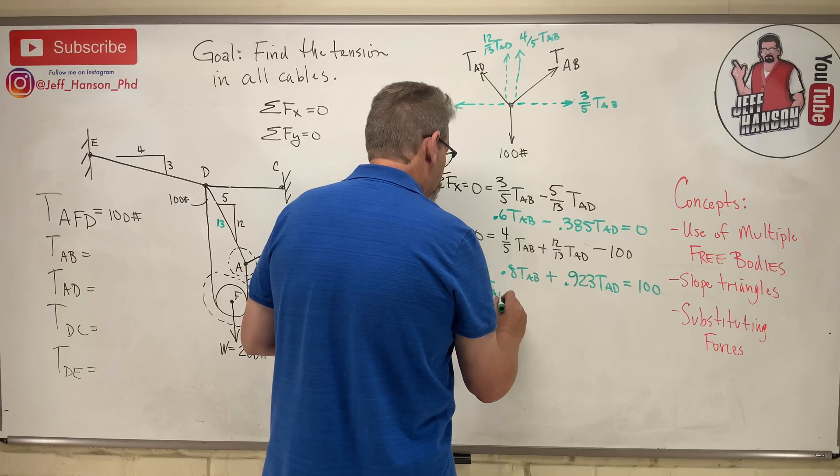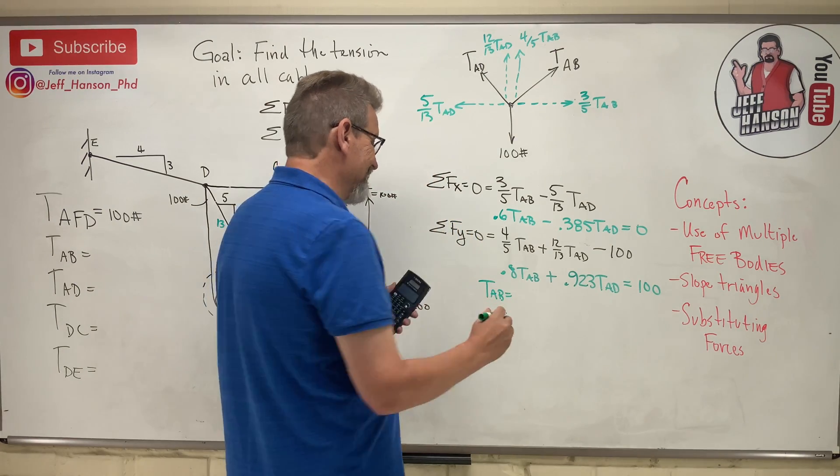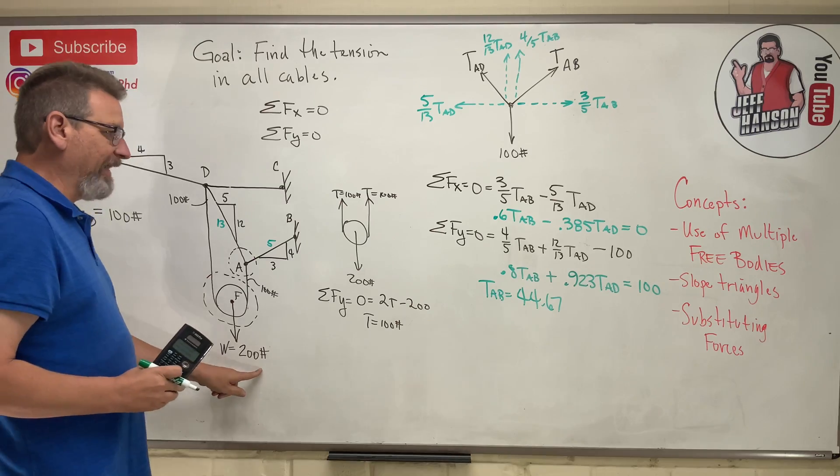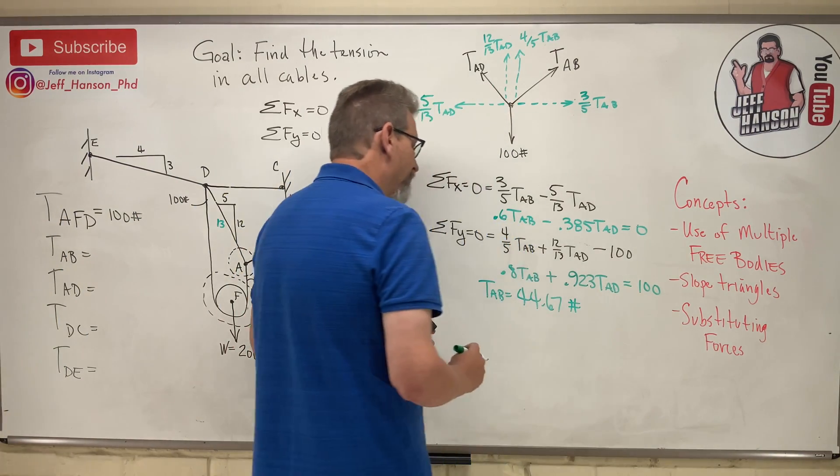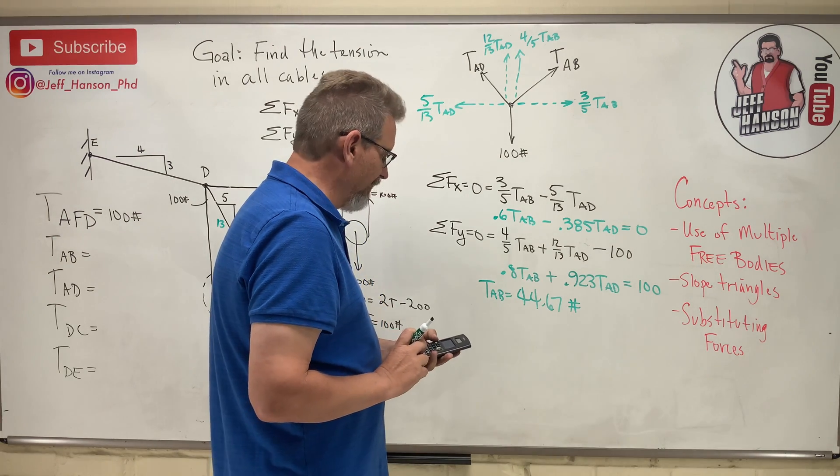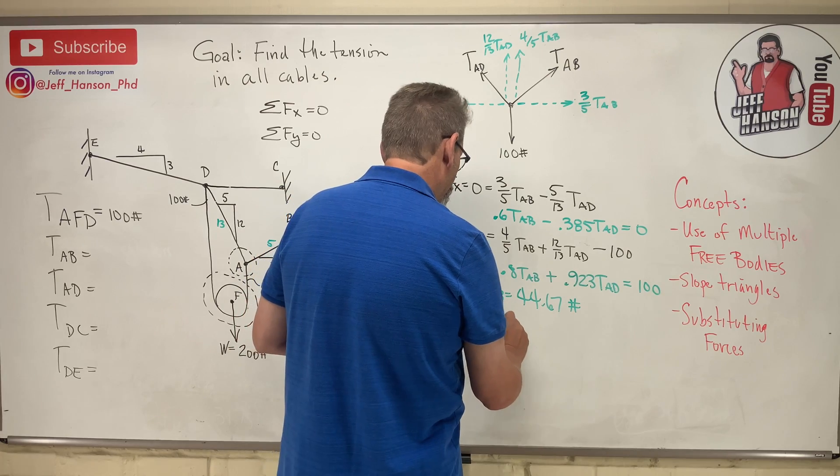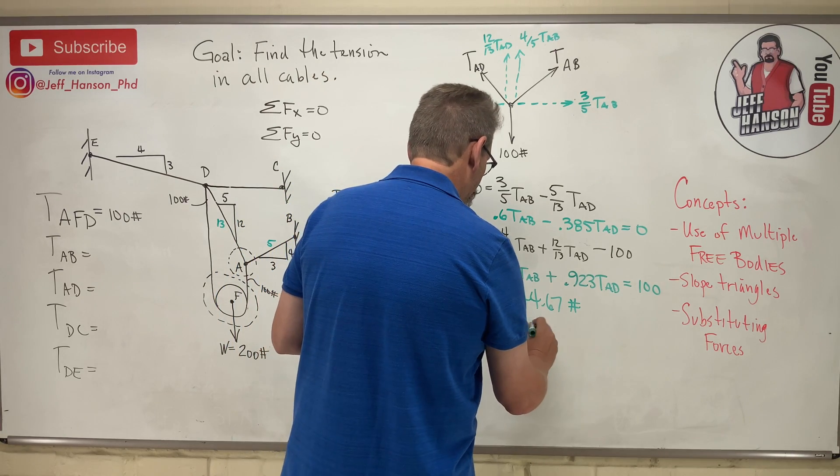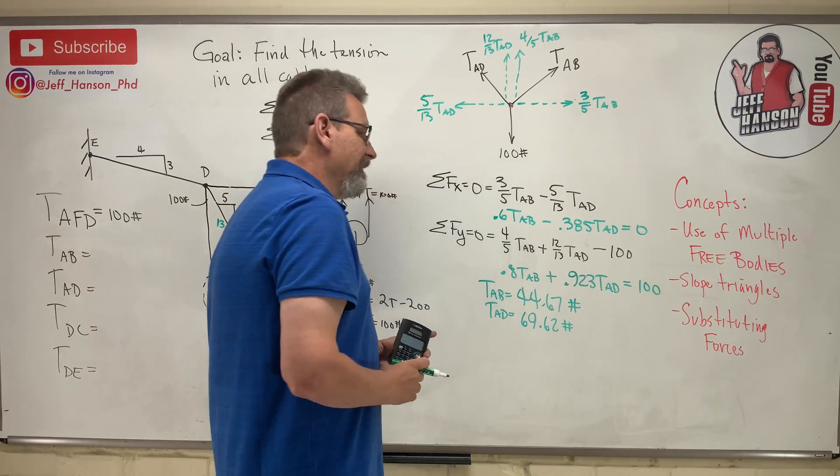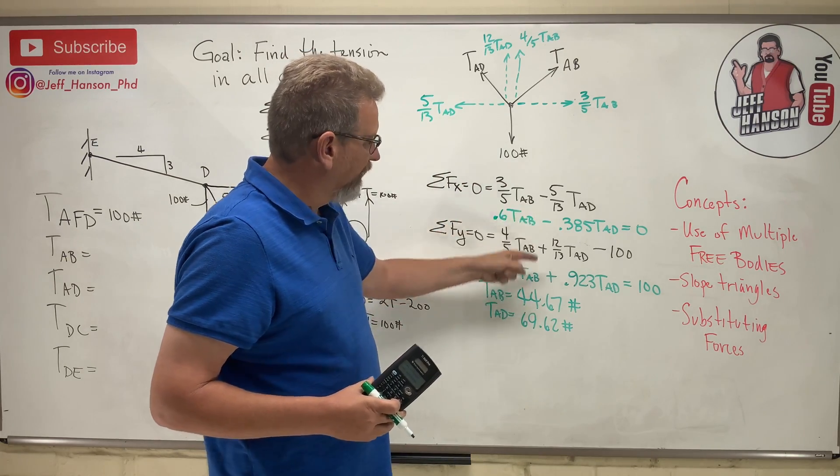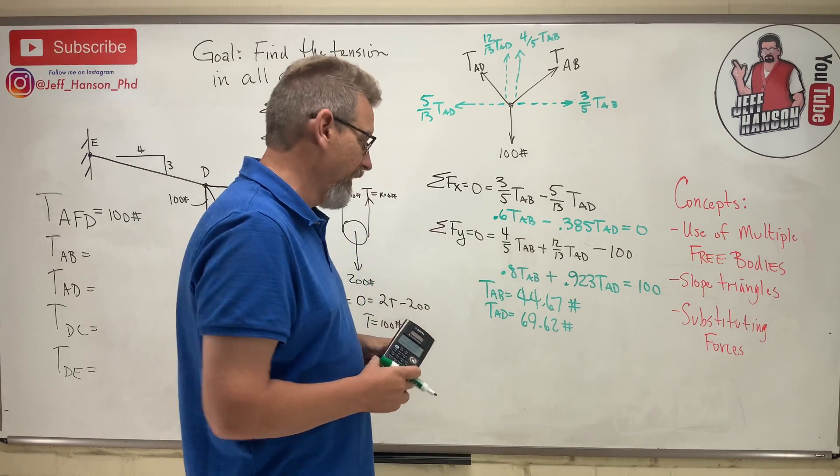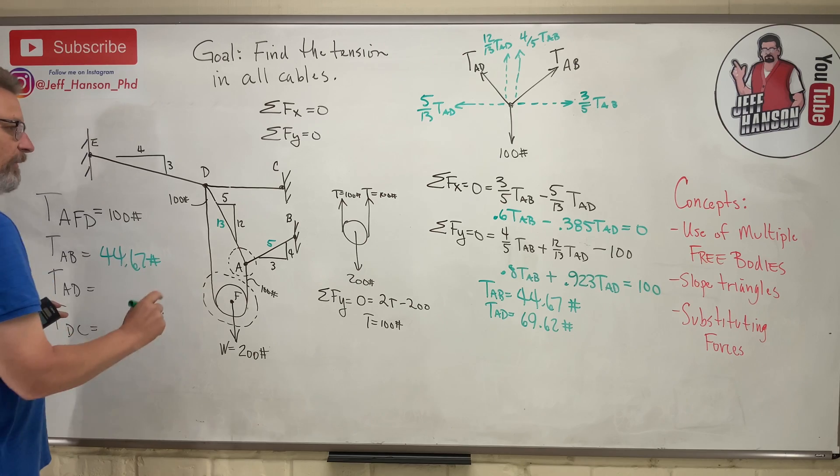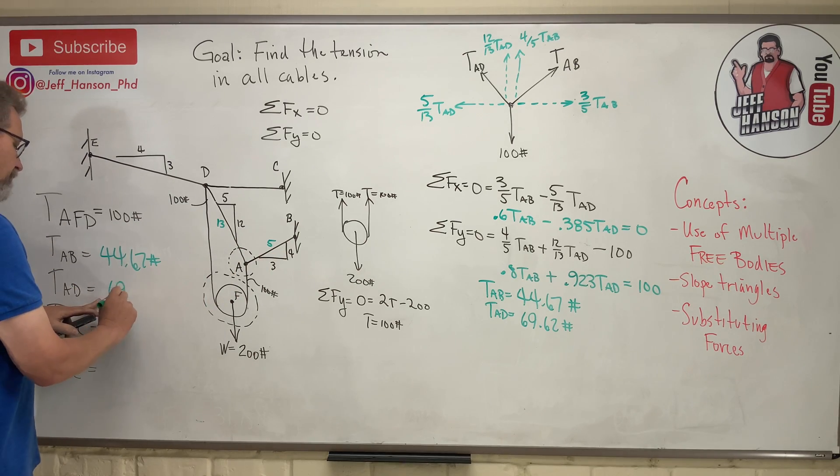And it gives it to me. It says TAB is equal to 44.67. And that is, these are all in pounds, aren't they? Pounds. You can put LBS. I like hashtag because that's just a little shortcut way to write pounds. And then TAD, my system solver also gave me TAD, is 69.62. Now, you know, I like the system solver. If you want me to show you how to do all this plugging and chugging, you need to go watch my series on algebra. So look over here. We got TAB now, 44.67 pounds. And we got TAD, 69.62 pounds. We got two to go, two to go.